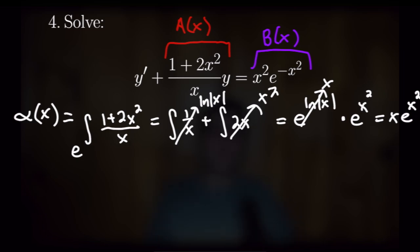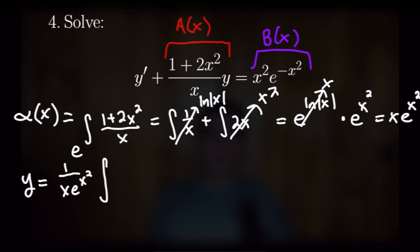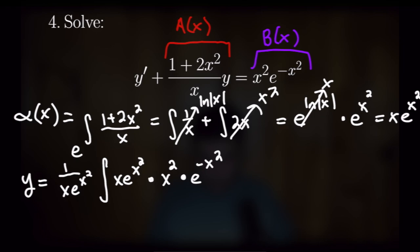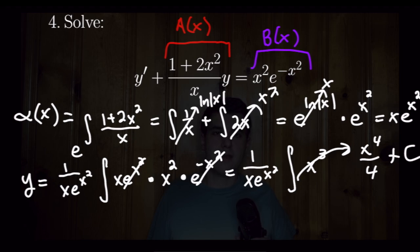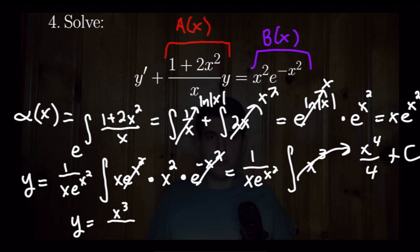Plugging the integrating factor into our formula, we have y equal to 1 over x times e to the x squared, times the integral of x times e to the x squared times x squared times e to the negative x squared dx. The e to the x squared and e to the negative x squared cancel, leaving us with the integral of x cubed dx, which equals x to the fourth over 4 plus c. Multiplying through by 1 over x times e to the x squared, our final answer is y equal to x cubed over 4 times e to the x squared — wait, distributing properly: y is equal to x cubed over 4 times... distributing gives y equal to x cubed over 4 divided by... our final answer is y equal to x cubed over 4 e to the x squared plus c over x e to the x squared.